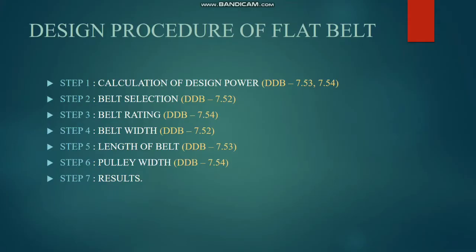Step 1 is calculation of design power. Step 2 is belt selection — what belt we will select. That gives us the page number, the belt rating, the width, and the length of belt and pulley width. This is the result of the 6 steps. Finally the result is done.